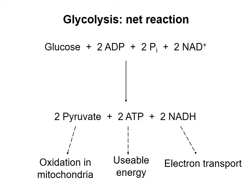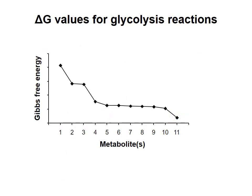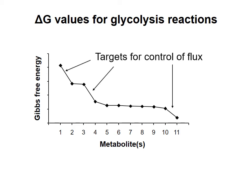So how is flux through glycolysis regulated? To answer that, we should look to the energetics of the pathway. The Gibbs free energy values of the metabolites in each step of glycolysis are plotted on this graph. The irreversible reactions — the reactions with large negative delta G values — are the targets of regulation of any metabolic pathway. In glycolysis, those reactions are the first, the third, and the tenth reactions.